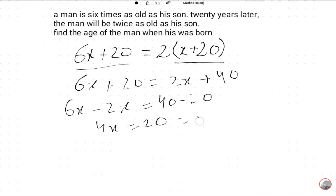So X will be 5. Twenty divided by 4 is 5. So the age of the son is 5. After 20 years, the man's age will be 6X, means 6 into 5 is 30 years.